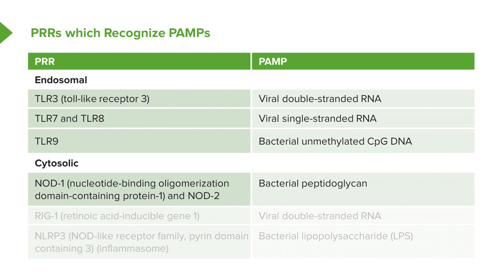Now, cytosolic pattern recognition receptors. NOD1 and NOD2 — nucleotide binding oligomerization domain containing proteins 1 and 2 — recognize bacterial peptidoglycans. These structures are found on gram-positive bacteria, so shared between many different bacteria, but the recognition of peptidoglycan by NOD1 and NOD2 is highly specific for that particular structure.